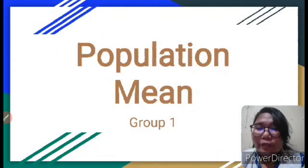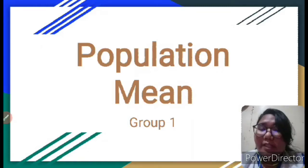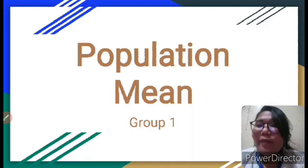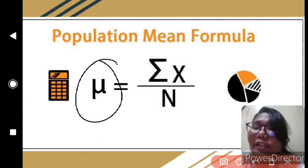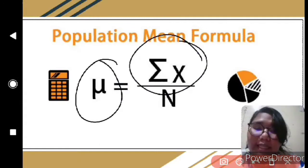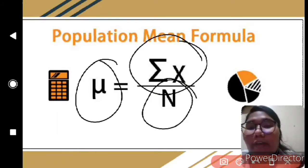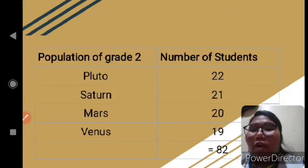Mountain of Roses, everyone. We are Group One, and I am going to talk about the population mean. Population mean is an average of a group characteristic. The group could be a person, item, or thing — for example, all people living in the United States, or all the green bags in my closet. A characteristic is just an item of interest. Here is the formula for the population mean.